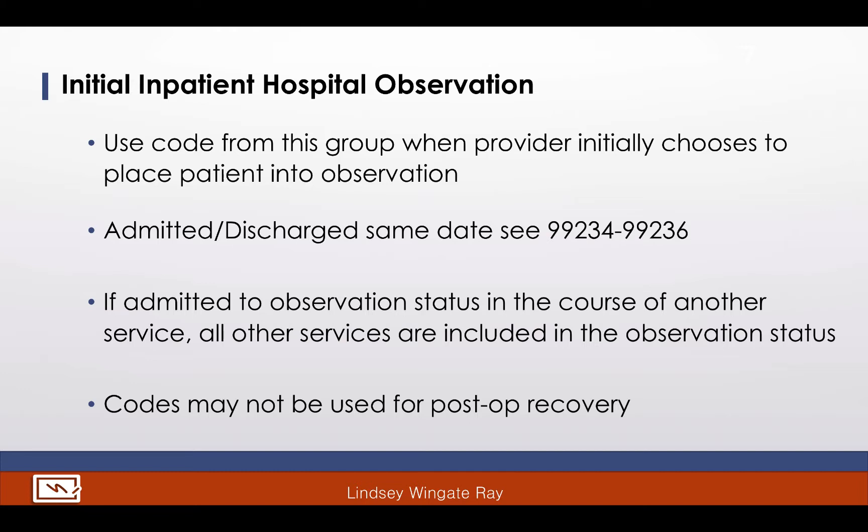Rules differ for different sections, so read and highlight carefully. For the category initial inpatient hospital observation, at the time the physician decides to put a patient in observation status, this would be the group of codes to choose from. The guidelines tell us when the patient is admitted to the hospital after being in observation care status on the same date, look at the notes for the initial hospital care. If admitted and discharged on the same date, look at codes 99234 to 99236.